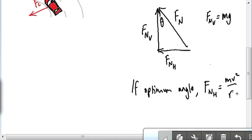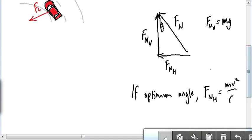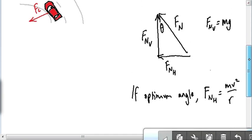Normally, some of that mv squared on r would be provided by friction as well, but at exactly the right angle, it's just the normal force's horizontal component. So, this now allows us to solve for the equation, finally. So, if we put these together, we use this triangle.